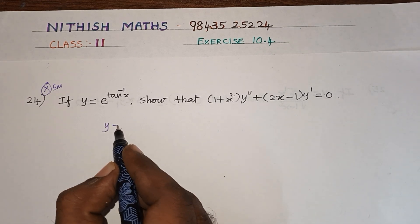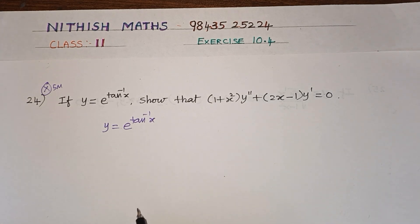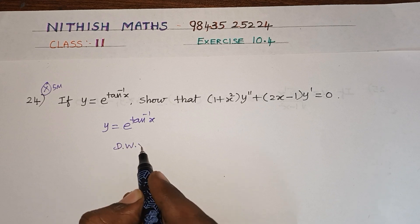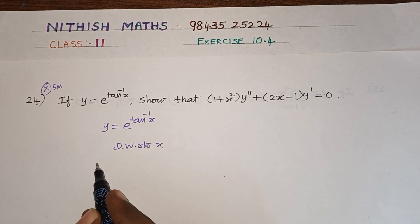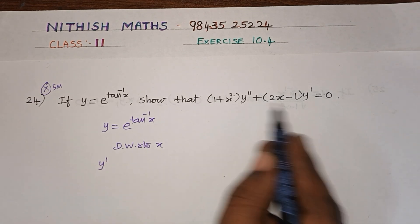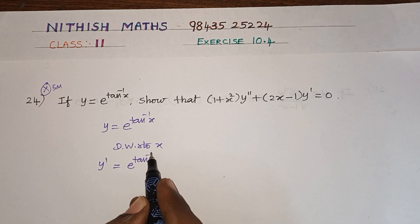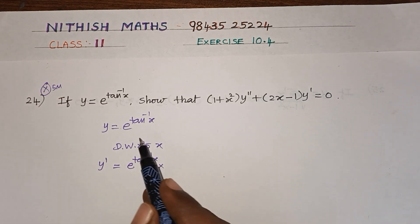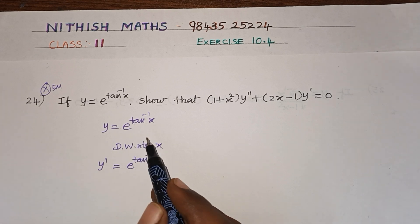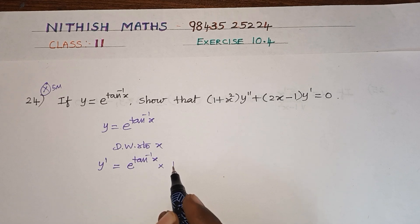So, if y equals e to the power tan inverse x. We differentiate with respect to x. y' = y1. Using the chain rule, e to the power x differentiates as e to the power x, then on the power, tan inverse x differentiates as 1 by (1 + x²).